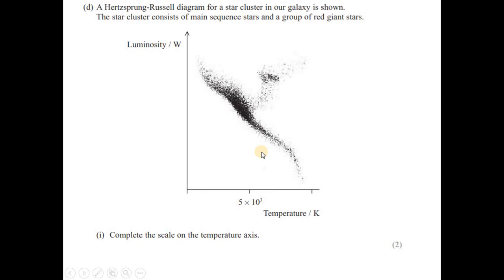A Hertzsprung-Russell HR diagram for a star cluster in our galaxy is shown. The star cluster consists of a main sequence of stars and a group of red giants. This is temperature. Complete the scale on the temperature axis. Remember for HR diagram, if you move rightward, temperature decreases. So if you see we have an equally distributed interval. So for the lowest temperature is around 2500, so you can say that it should be around 2.5 into 10 to the power 3. And if you go that side, so you can double that number and you can say that it is around 1 into 10 to the power 5. It's just the symmetry of this scale, something like that.